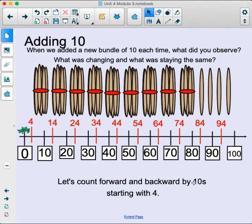Let's count forward and backwards by 10, starting with 4. 4, 14, 24, 34, 44, 54, 64, 74, 84, and 94. Awesome job, you guys.